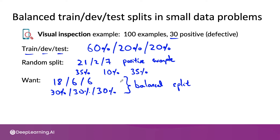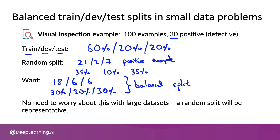This makes your datasets more representative of the true data distribution. There's no need to worry about this when you have a large dataset — a random split will very likely be representative, with the percentage of positive examples quite close to your overall dataset. But when you have a small dataset with just 20 dev set examples and 20 test set examples, explicitly ensuring a balanced split makes your dev set and test set more reliable measures of your learning algorithm's performance.